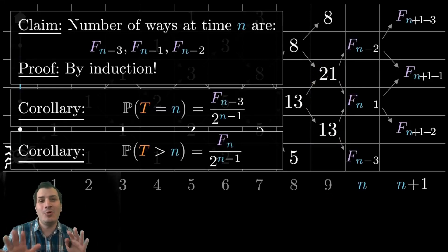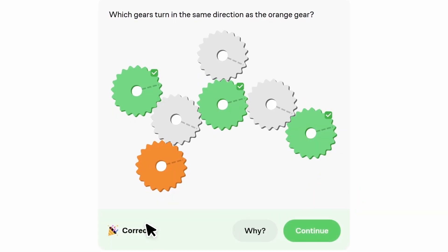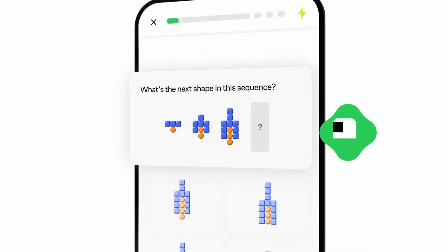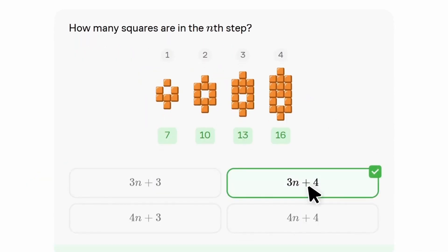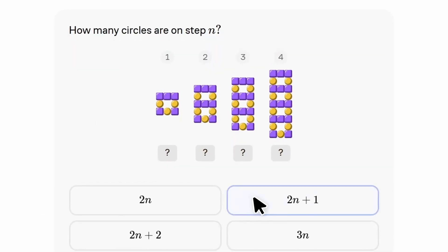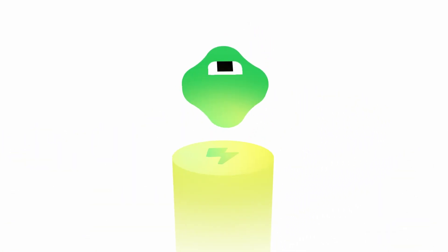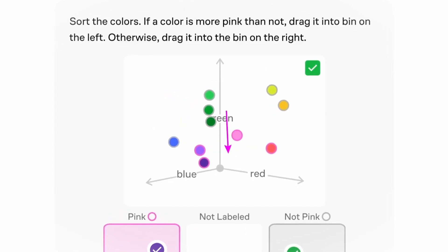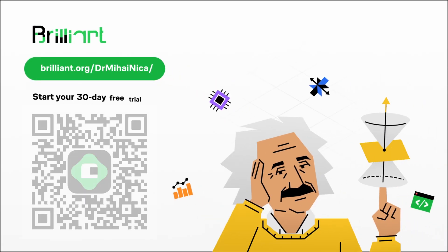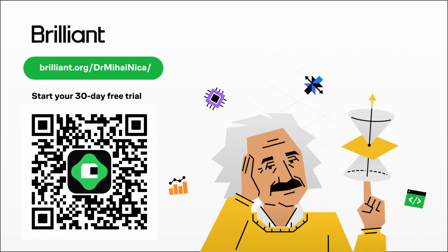If you're looking for even more fun math puzzles, check out the sponsor of today's video, Brilliant. Thousands of interactive lessons are waiting in Brilliant's extensive catalog, spanning topics from math to science to programming and AI. The Brilliant app lets you bring it all with you wherever you go — quick activities you can try in just minutes to dive into a new topic or stretch your brain. By using Brilliant, you'll build a habit that helps you get a little bit smarter every day. To try everything Brilliant has to offer free for a full 30 days, visit the link in the video description. You'll also get 20% off an annual premium subscription.